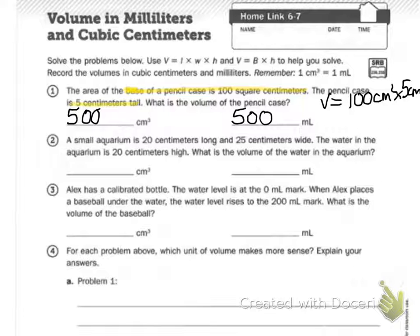2 and 3 you're going to do on your own. A small aquarium is 20 centimeters long and 25 centimeters wide. The water in the aquarium is 20 centimeters high. You want to use the first formula for this one. What is the volume of water in the aquarium?